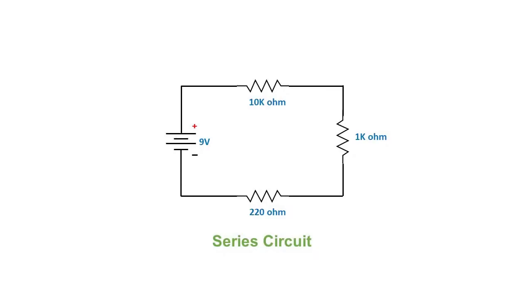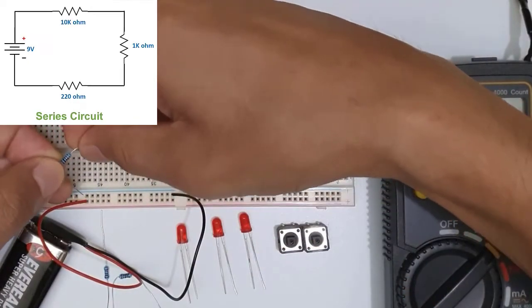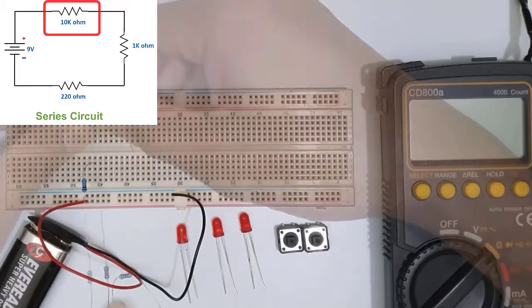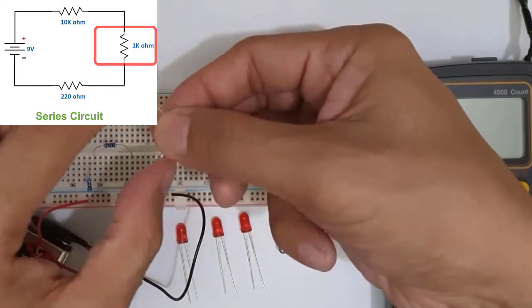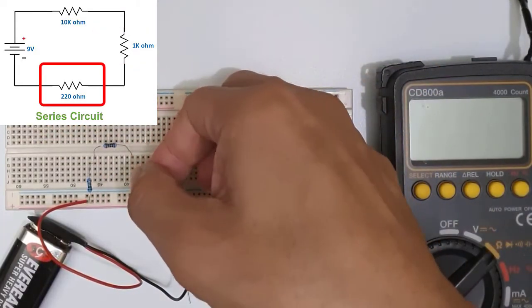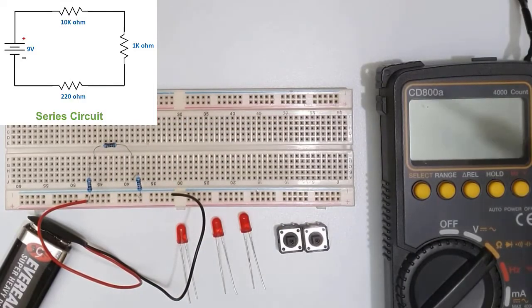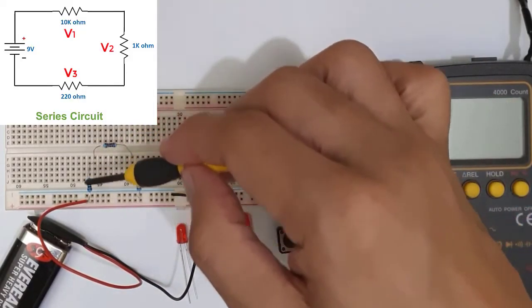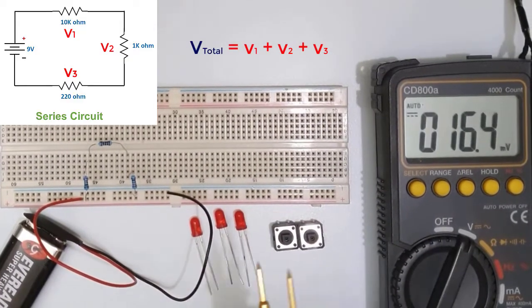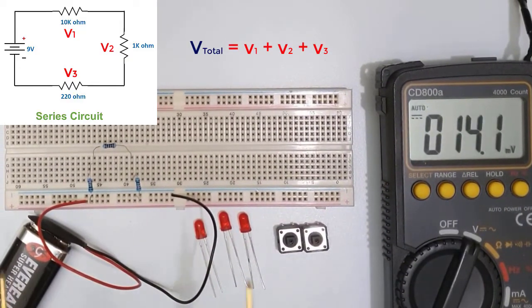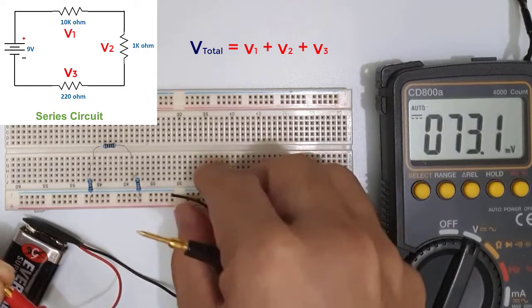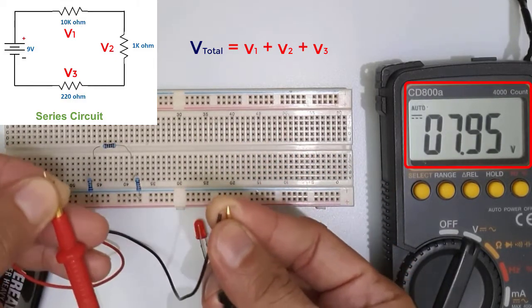Now let's have an example of a series circuit connection and explain the principles behind it. Given this diagram — a battery and three resistors connected in series — I can implement it in this way. The rules in a series circuit connection are as follows. First, the sum of the individual voltage drops is equal to the total supplied voltage. For example, if I measure this battery directly from a voltmeter, I can read 7.95 volts. This battery is quite old and no longer supplying 9 volts, but it can still be used for this illustration.